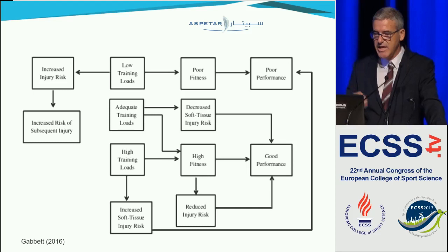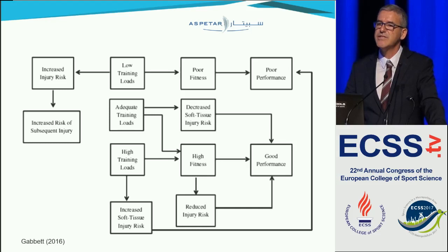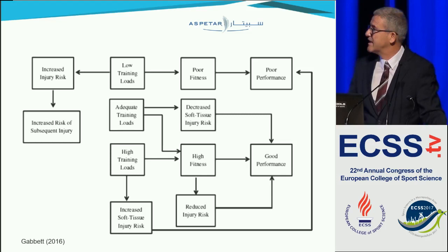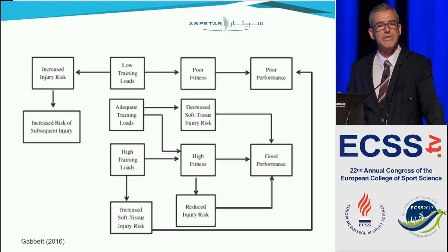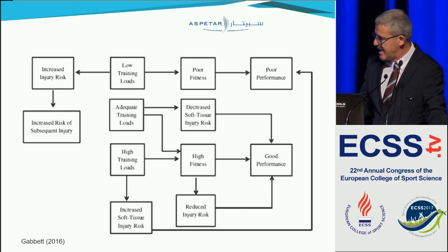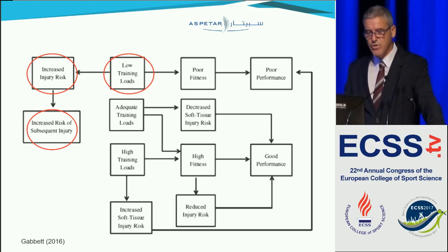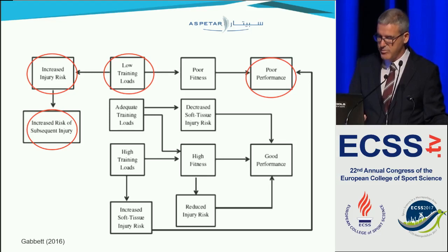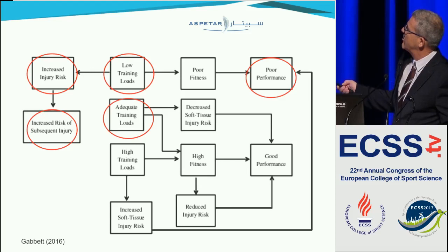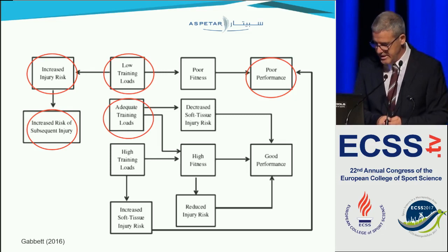As seen in several studies at this conference, aerobic fitness is now considered a key factor affecting the relationship between workload and injuries. This is nicely summarized by Tim Gabbett: a low training load leads to increased injury risk, which increases the risk of subsequent injury, and low training load also results in poor performance. On the other side, adequate training load decreases soft tissue injury risk and results in good performance — that is the relationship between workload, injury, and performance.